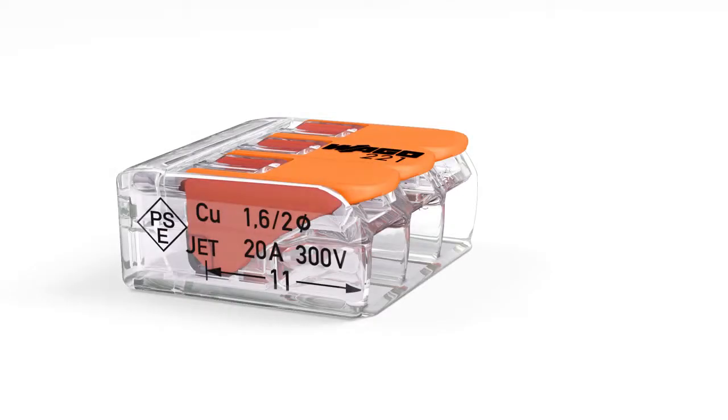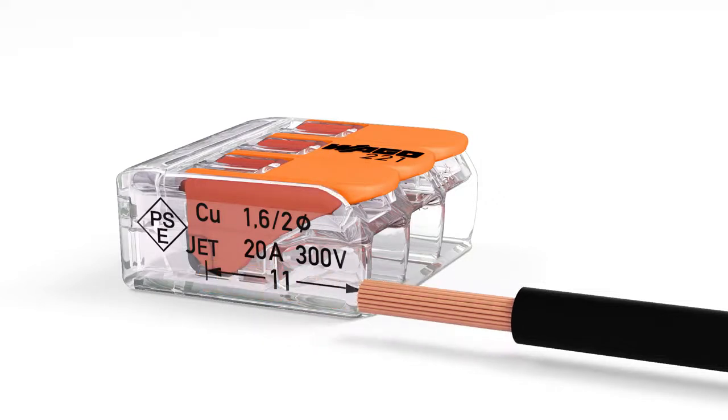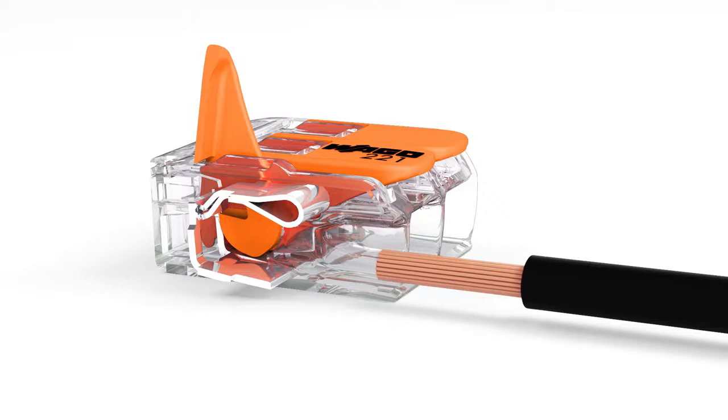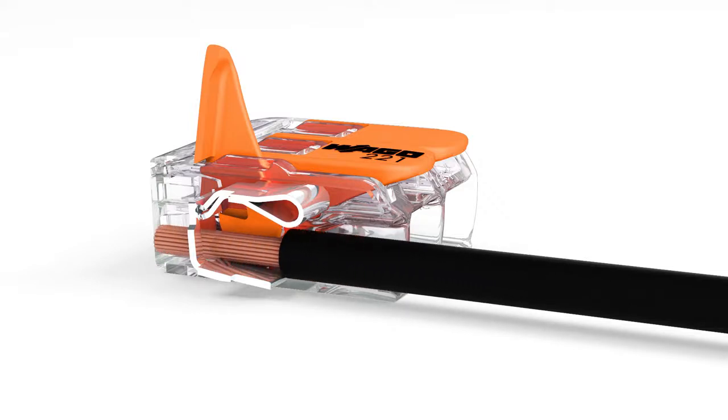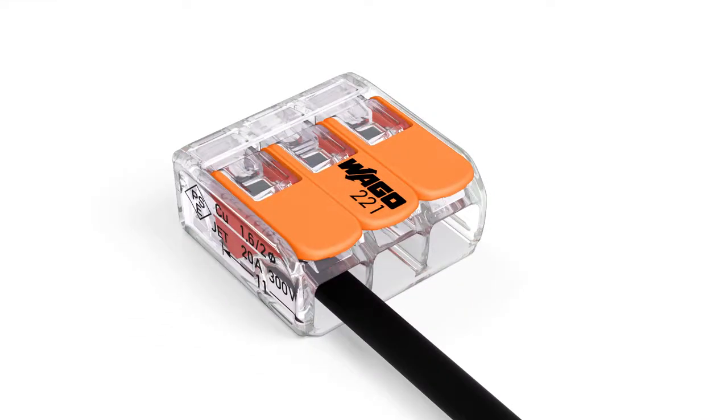Wiring is very easy. Strip conductor to 11 millimeters or 0.43 inches. Open the clamping unit via integrated lever. Insert conductor. Compared to its predecessor, the 222 series, the 221 series operating levers can now be opened using noticeably less force. Then lower the lever to close the clamp.